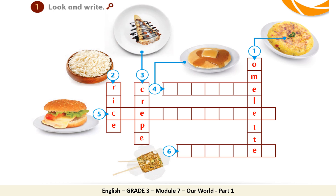Now let's move on to number four. Can you tell me which food you can see in the picture? It's a cheeseburger. Now let's move on to number five. Which food is it? It's a cheeseburger. Finally, let's name the food in picture number six. Can you tell me what is it? You're a star — it's noodles. You've done a great job, my darlings.